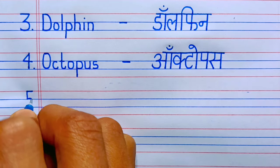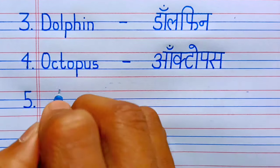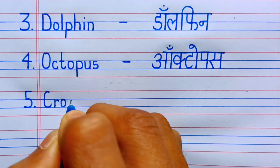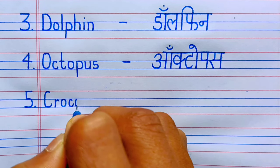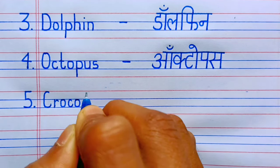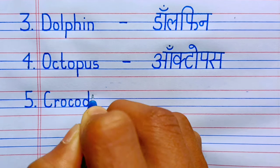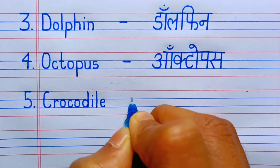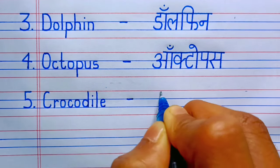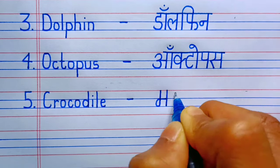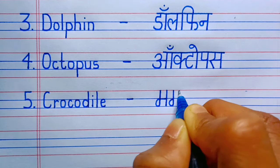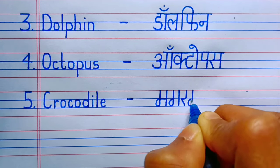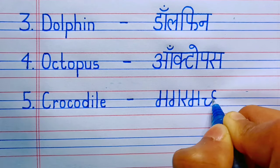Number five: C-R-O-C-O-D-I-L-E, crocodile. Crocodile means magarmach.